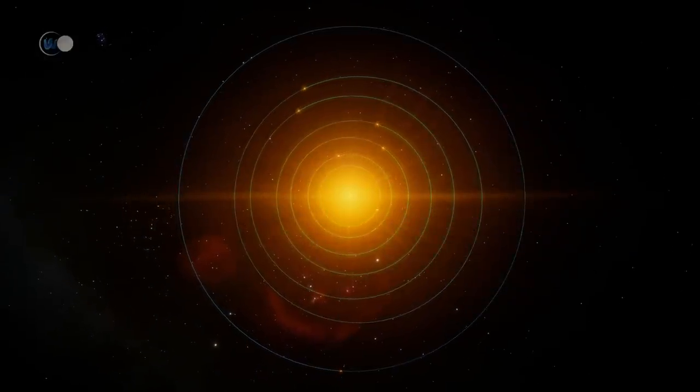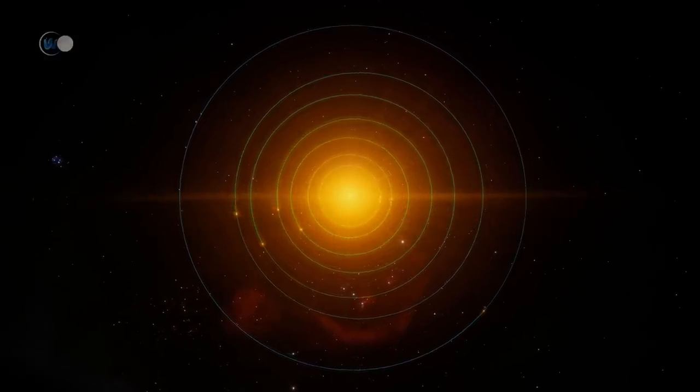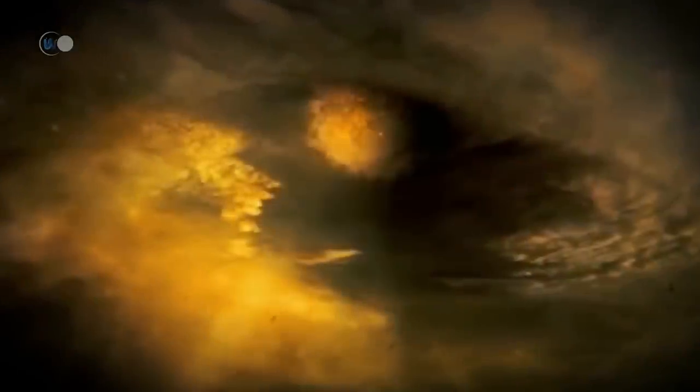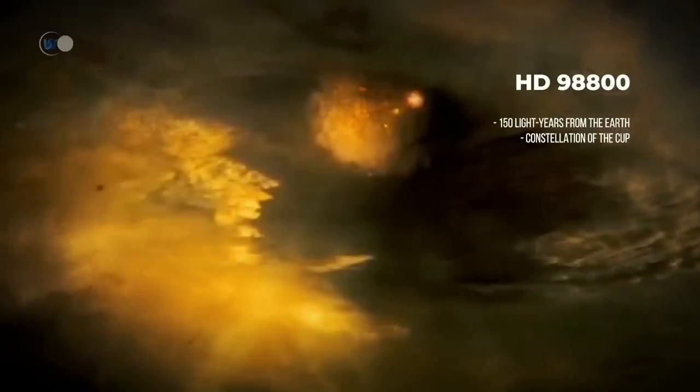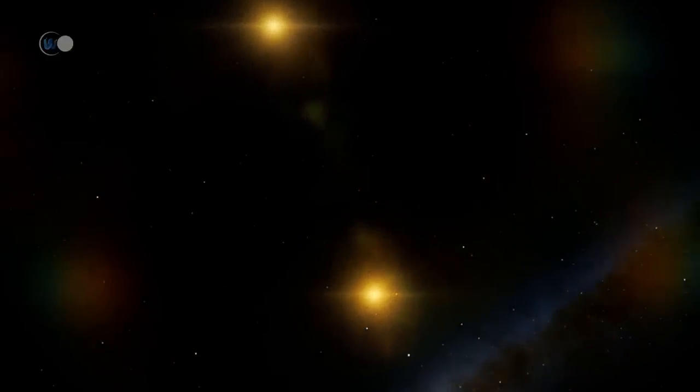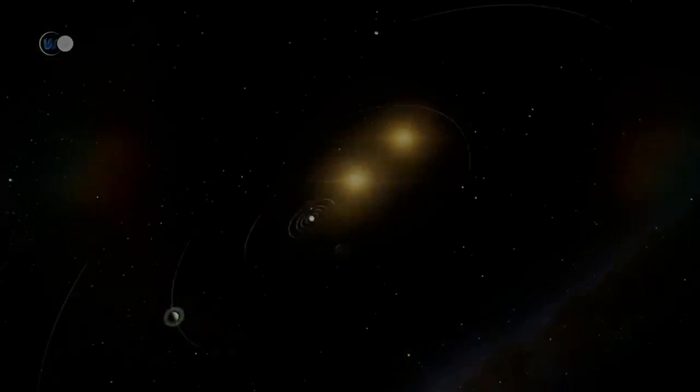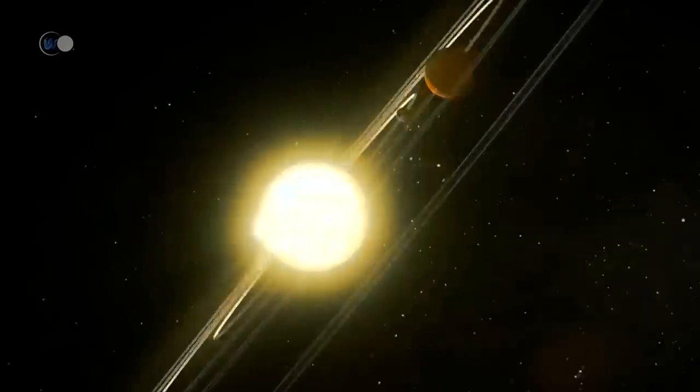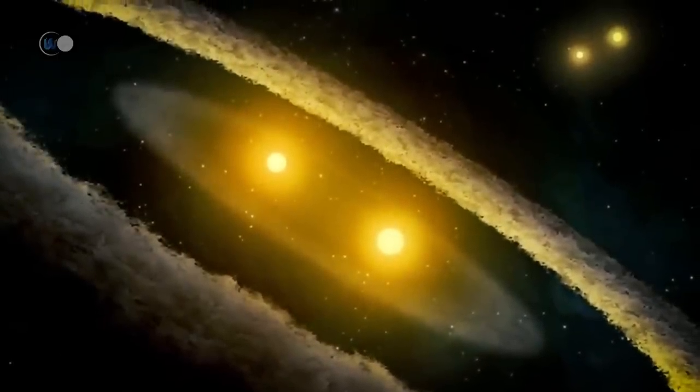This is particularly the case for a system that is 150 light years away from our galaxy. The system, HD 98800 or TV Craterus. This one consists of two pairs of stars, distant from each other by 150 million kilometers or 93 million miles. I let you imagine what our sky would look like with four suns. But what makes it even more spectacular is the disk of dust that surrounds one of these two pairs.